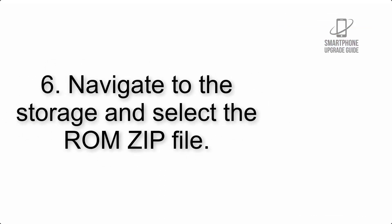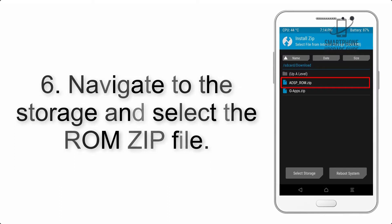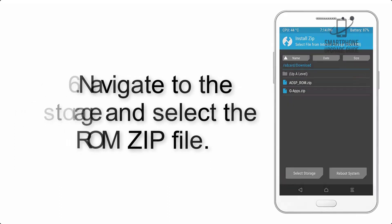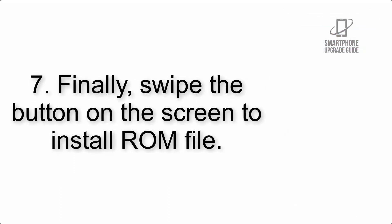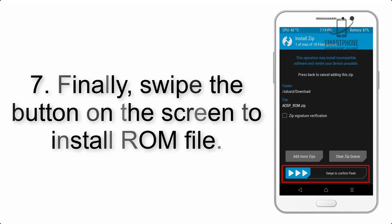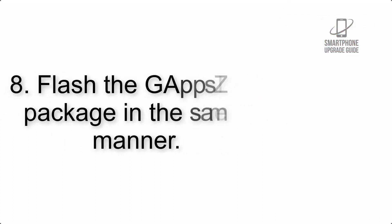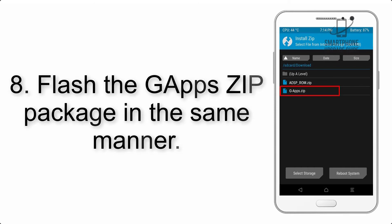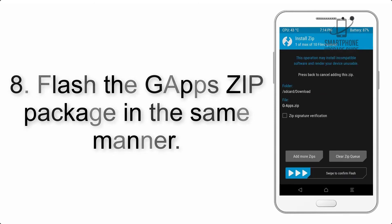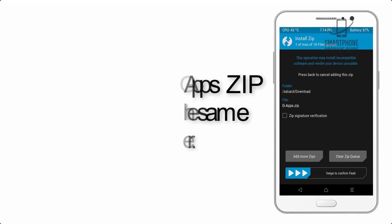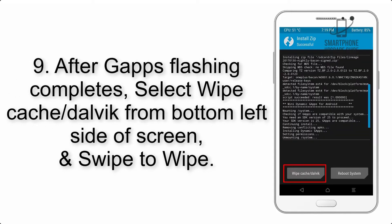Step 5: Go back to the recovery main screen and tap on the Install button. Step 6: Navigate to the storage and select the ROM zip file. Step 7: Swipe the button on the screen to install the ROM file. Step 8: Flash the GApps zip package in the same manner.